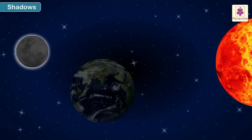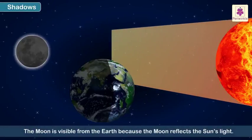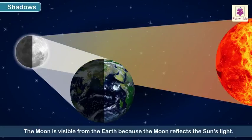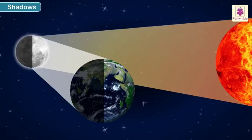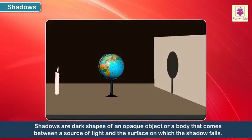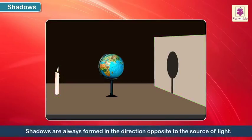Shadows. We have learned that the Moon is visible from the Earth because the Moon reflects the Sun's light. Shadows are dark shapes of an opaque object or a body that comes between a source of light and the surface on which the shadow falls. Shadows are always formed in the direction opposite to the source of light.